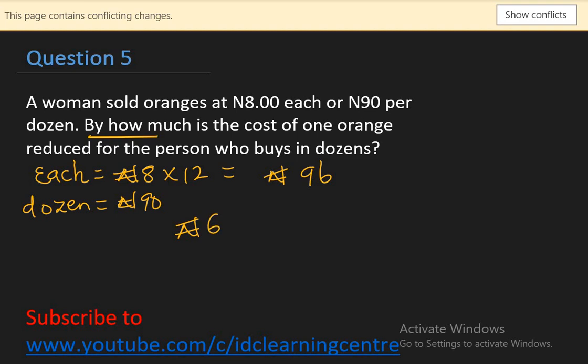The question asks by how much is the cost of one orange reduced. The difference is 6 Naira out of 12 oranges — a dozen — so 6 divided by 12 equals one half Naira. That's half Naira, which is the same as 50 kobo.